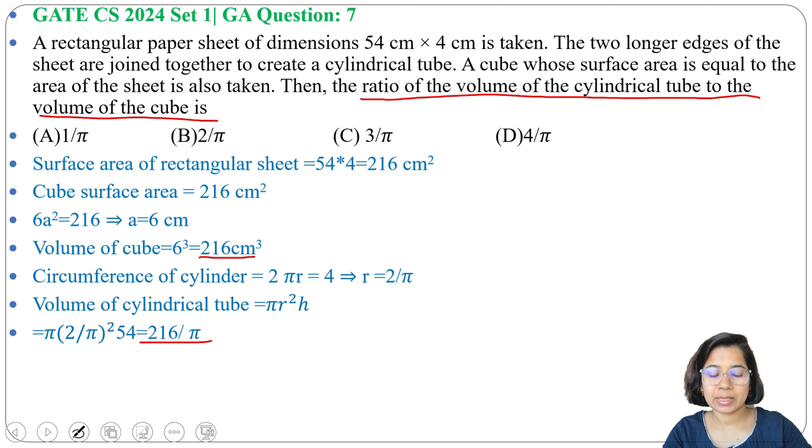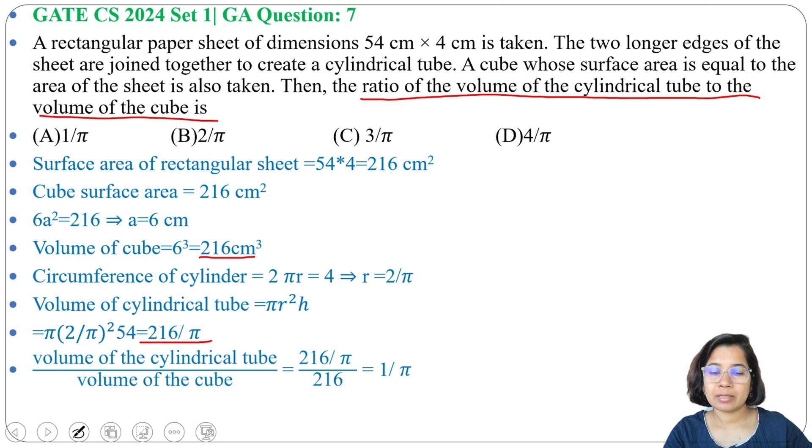And volume of the cube is 216. So 216 divided by π divided by 216, it's 1 by π. And it's present in option A, so answer will be option A, 1 divided by π. The ratio of the volume of the cylindrical tube to the volume of the cube is 1 by π.